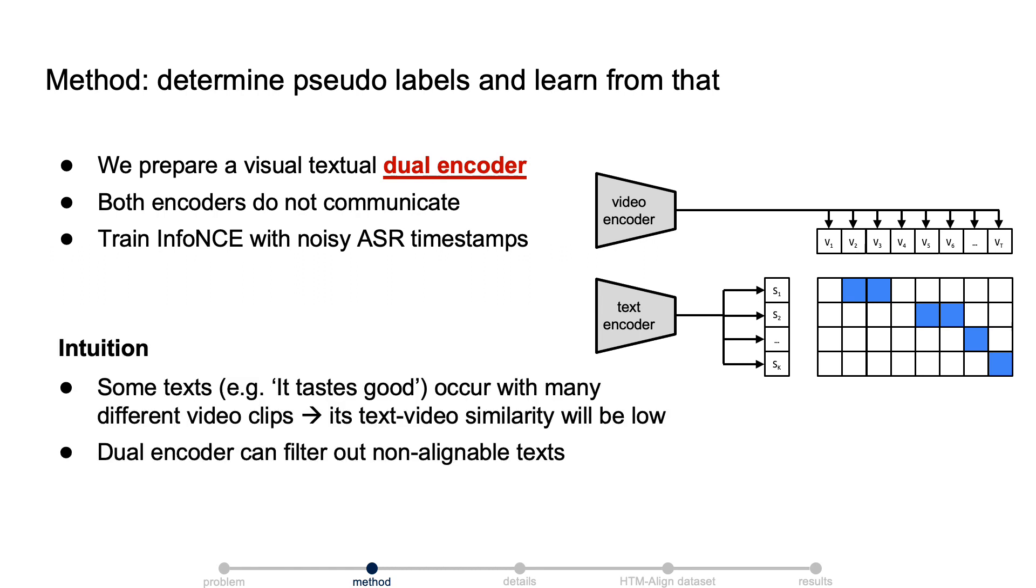Intuitively, because the video and text are encoded separately, and some text, like it tastes good, occur with many different video clips. After training with the infoNCE loss, the text video similarity will still be very low. As a result, dual encoder can filter out non-alignable texts.